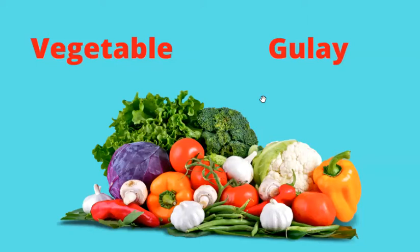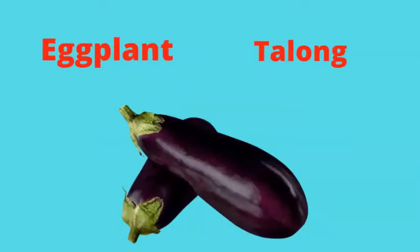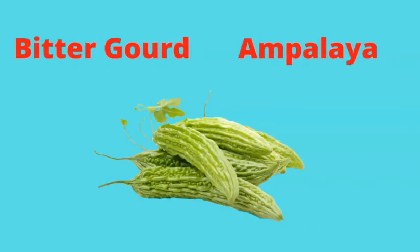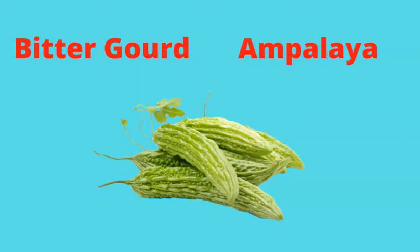So let's start. First one is eggplant — talong. Bitter gourd — ampalaya. Moringa — malunggay.